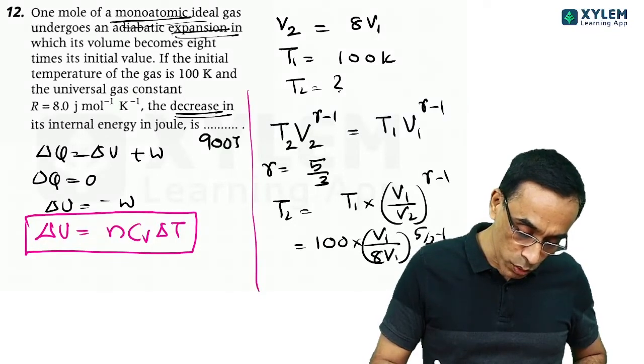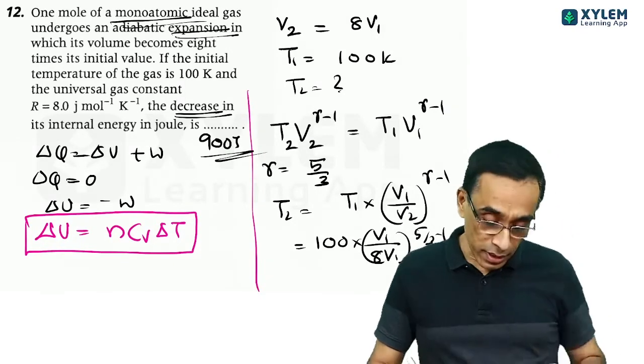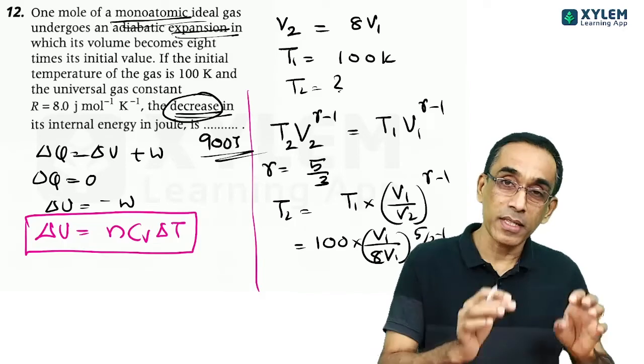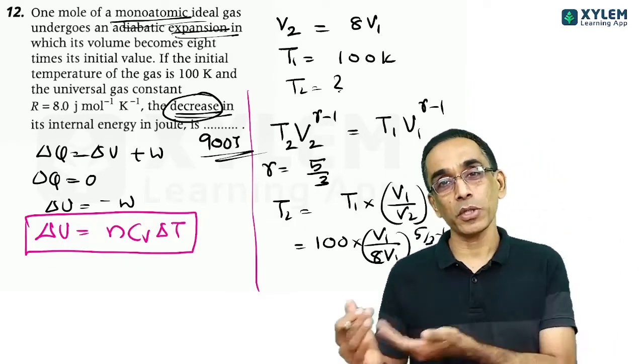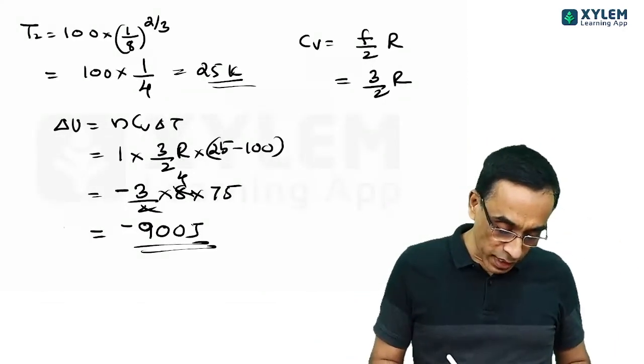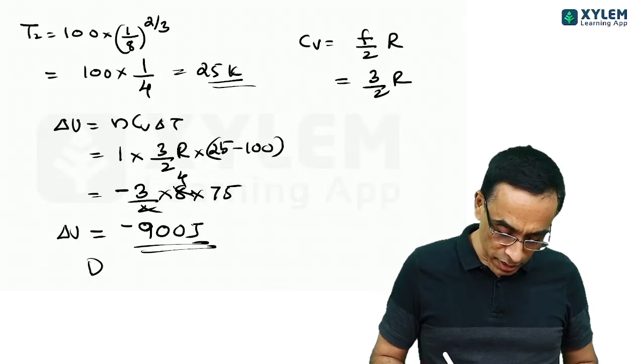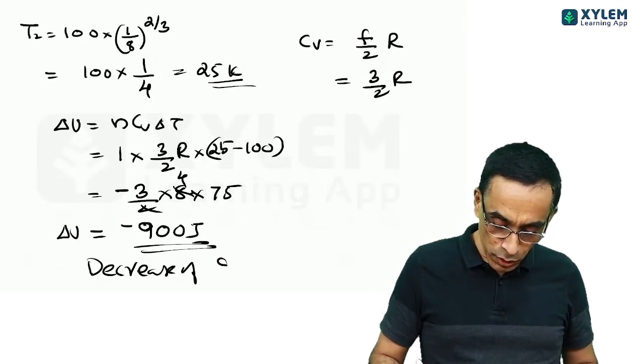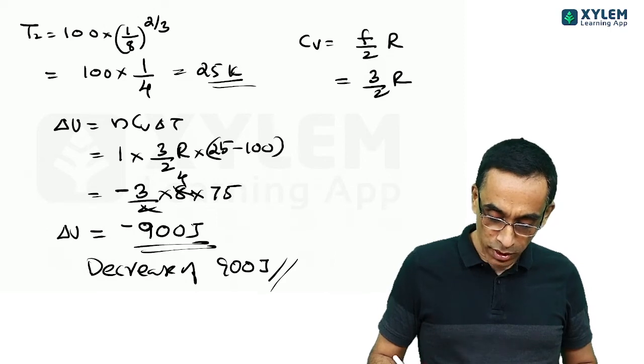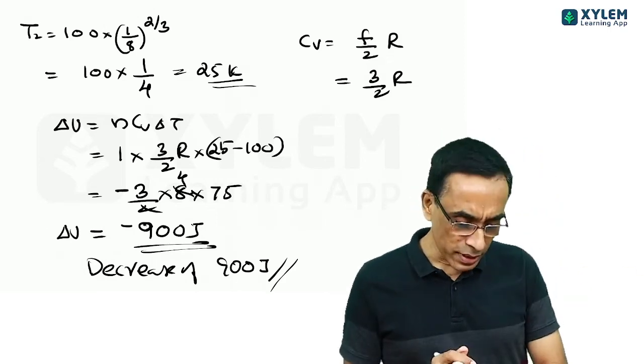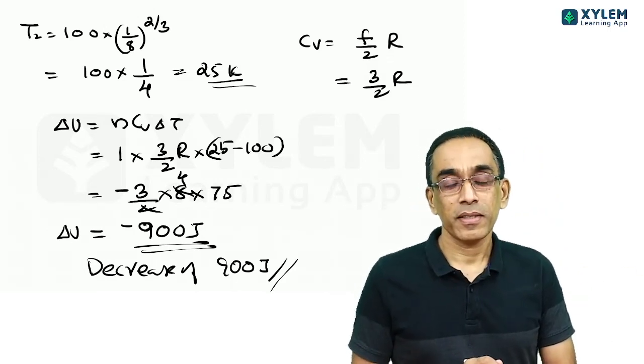So your answer is 900. 900 Joule. You do not have to use the minus sign here because they have mentioned decrease. Decrease is the change of 900. The change is minus 900. The answer is decrease of 900 Joule. So that is a very simple question, easy to calculate. Thank you so much.